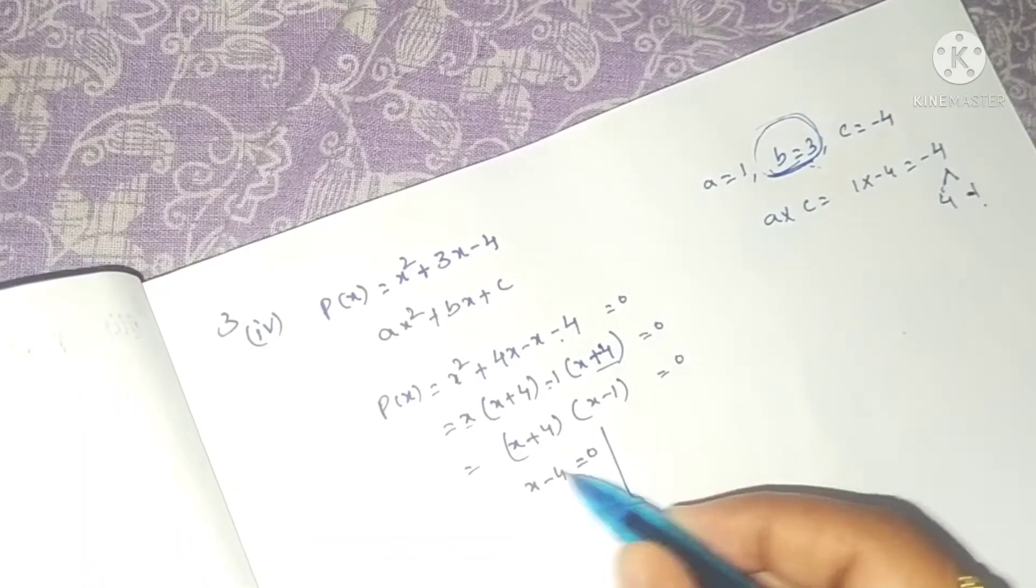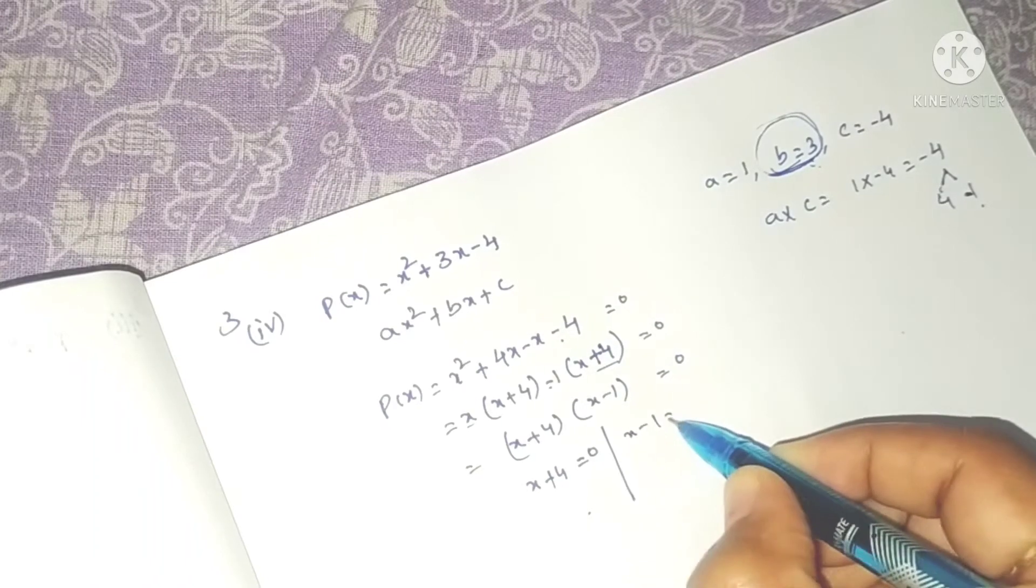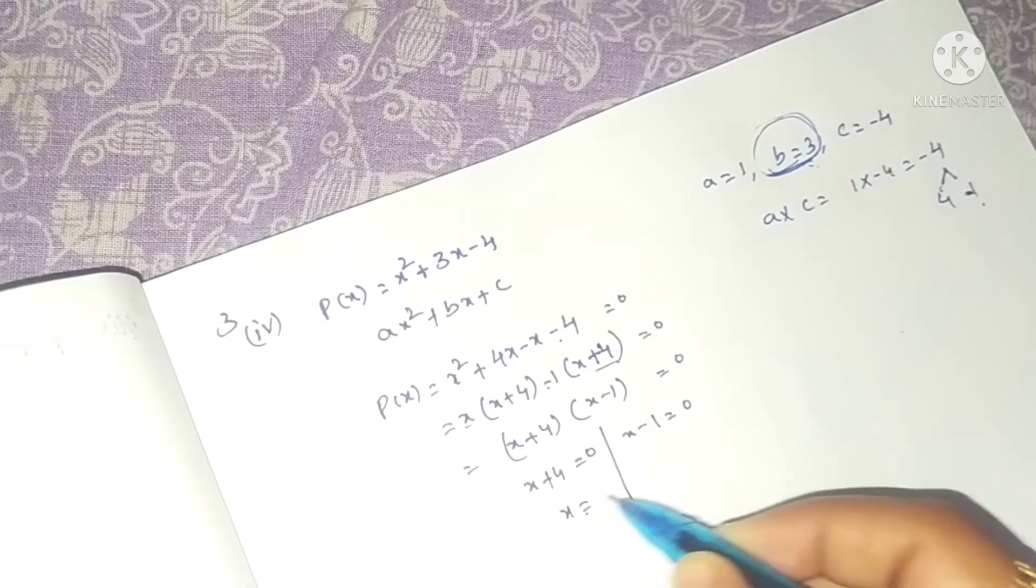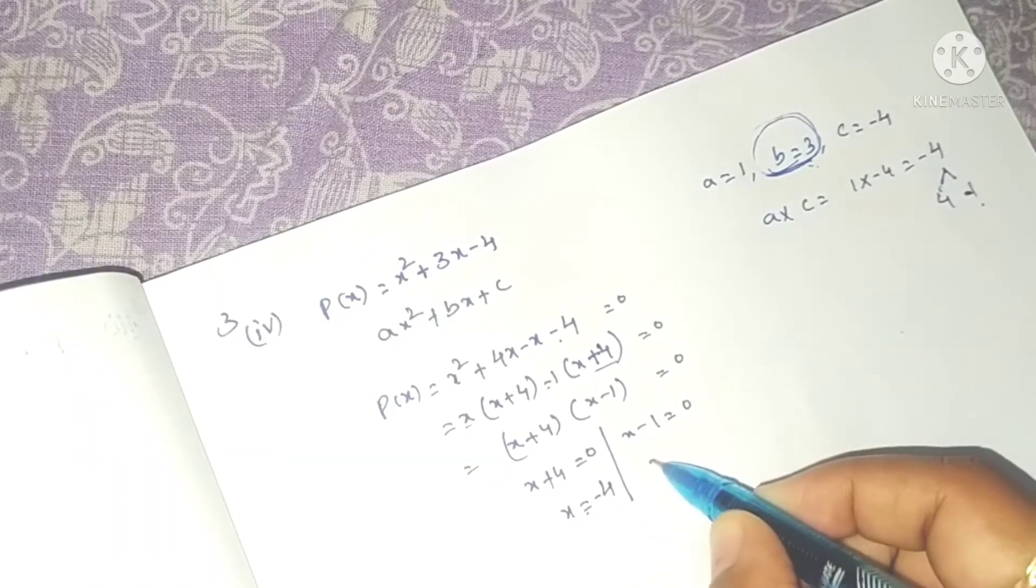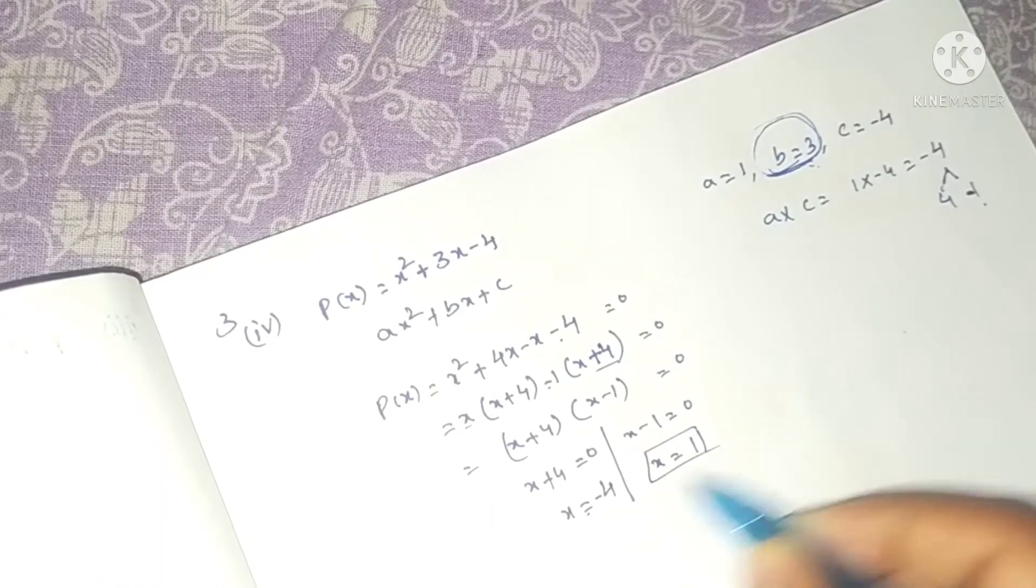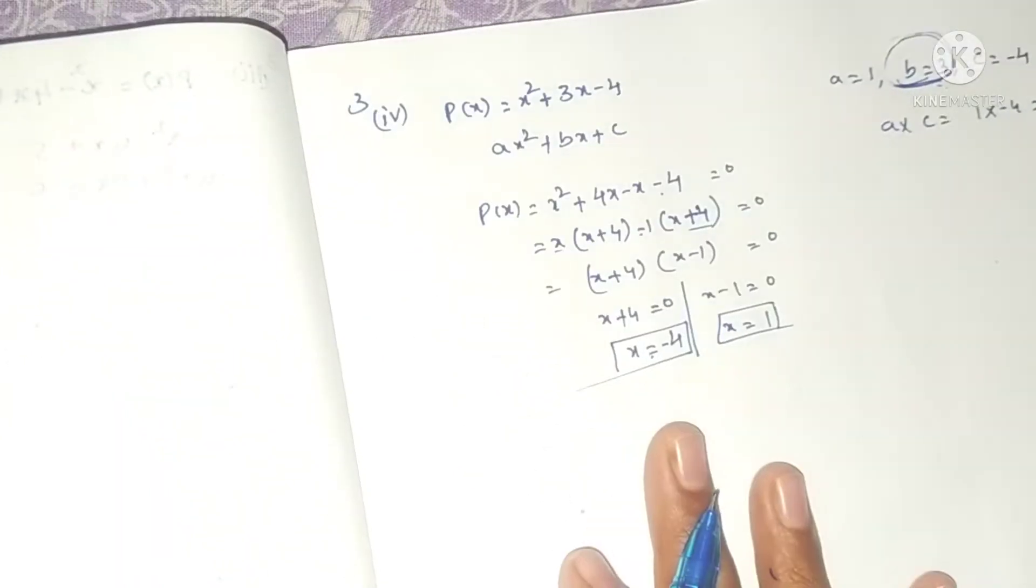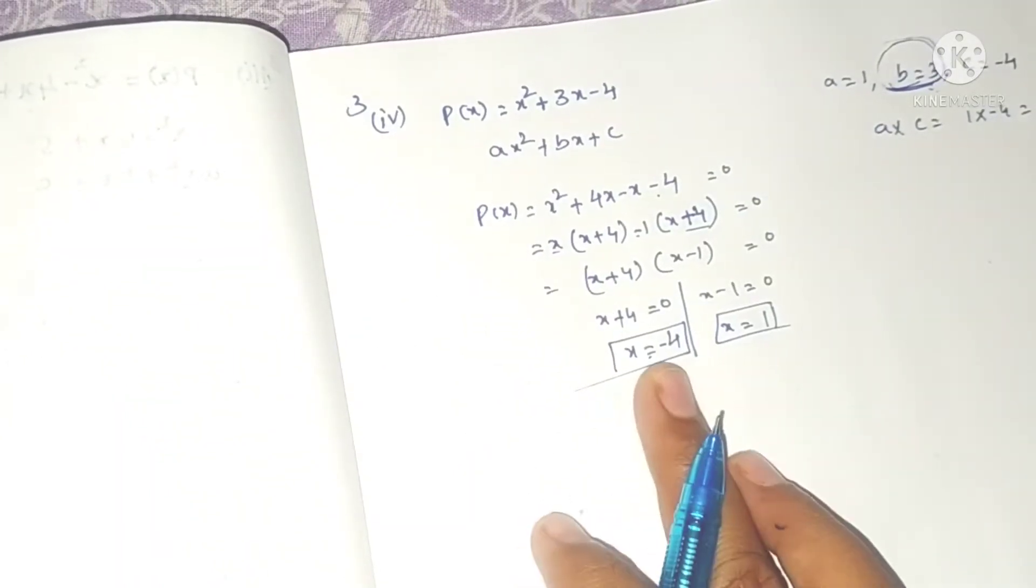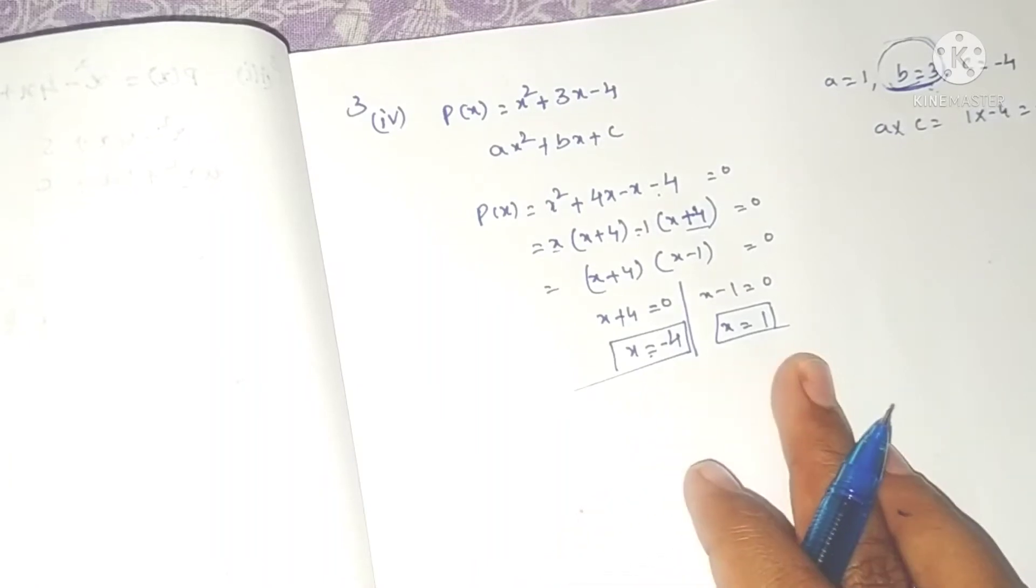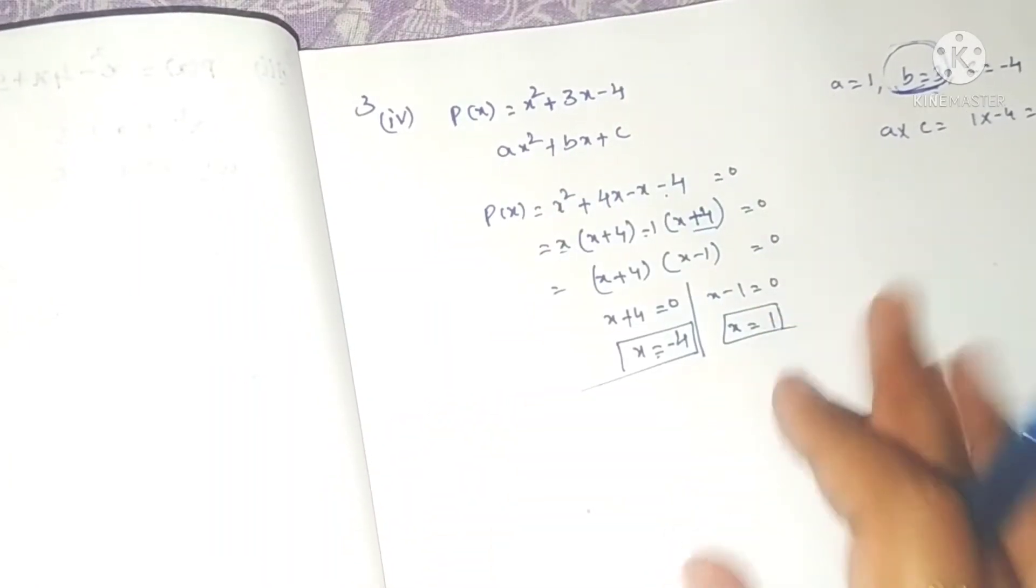Taking x plus 4 common, we get x plus 4 times x minus 1. When we equate this to 0, either x plus 4 equals 0 or x minus 1 equals 0. So x equals minus 4 or x equals 1.